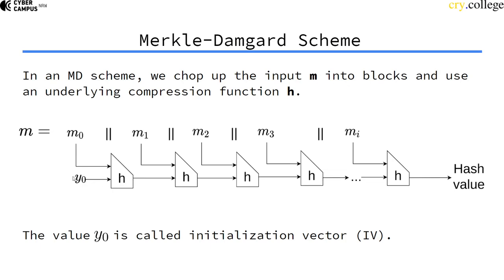This Y0 chaining value is usually a hard-coded so-called initialization vector. And actually this simple form of using compression functions multiple times via iteration with a chaining value is what's called the Merkle-Damgard scheme that is used quite often in hash functions.